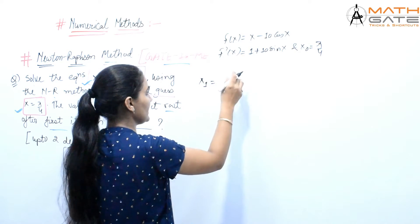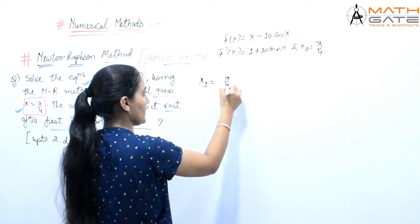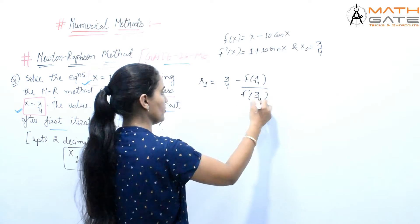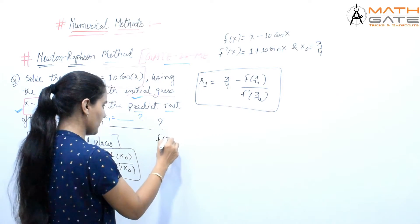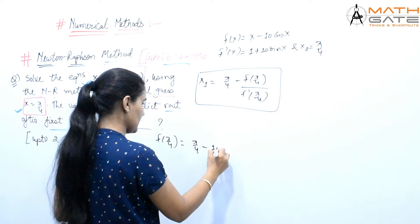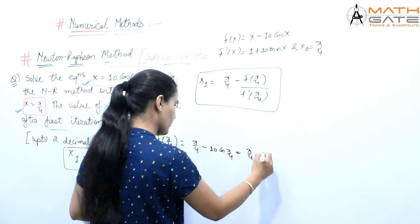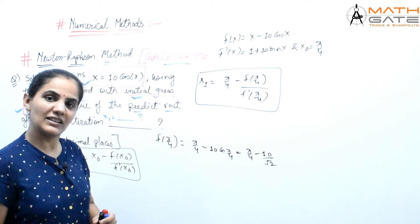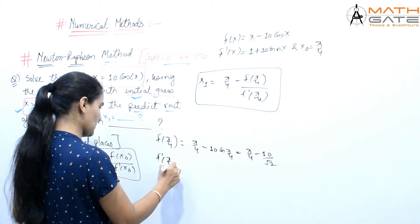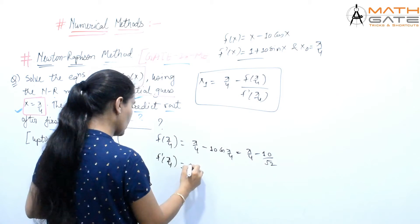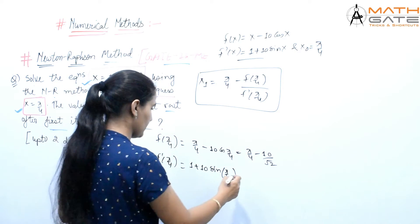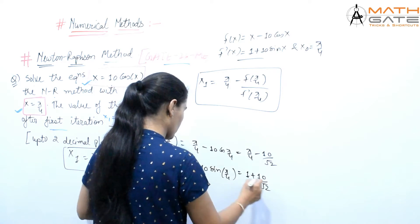For the first iteration, x1 = π/4 minus f(π/4) divided by f'(π/4). To find f(π/4): substituting x = π/4 gives π/4 minus 10 cos(π/4) = π/4 minus 10 divided by root 2, since cos(π/4) = 1/root 2. For f'(π/4): substituting gives 1 plus 10 sin(π/4) = 1 plus 10 divided by root 2, since sin(π/4) = 1/root 2.